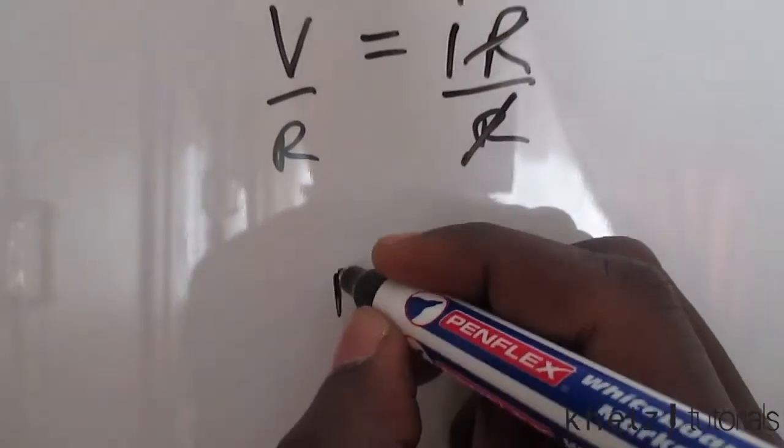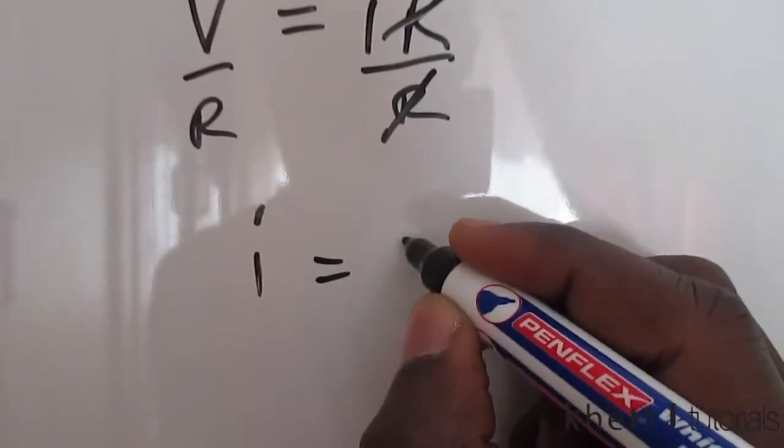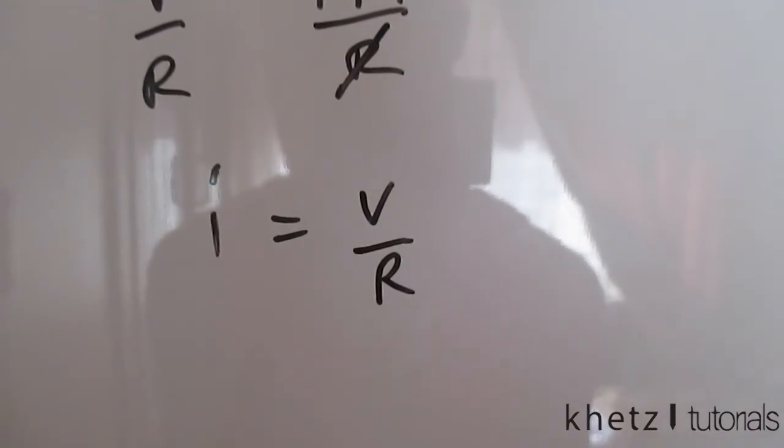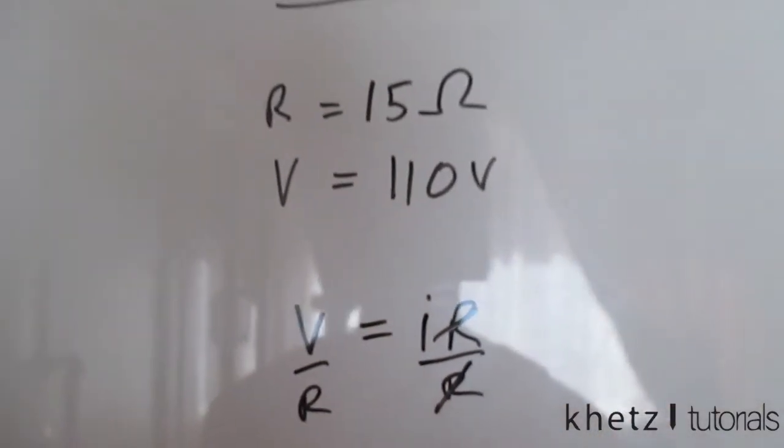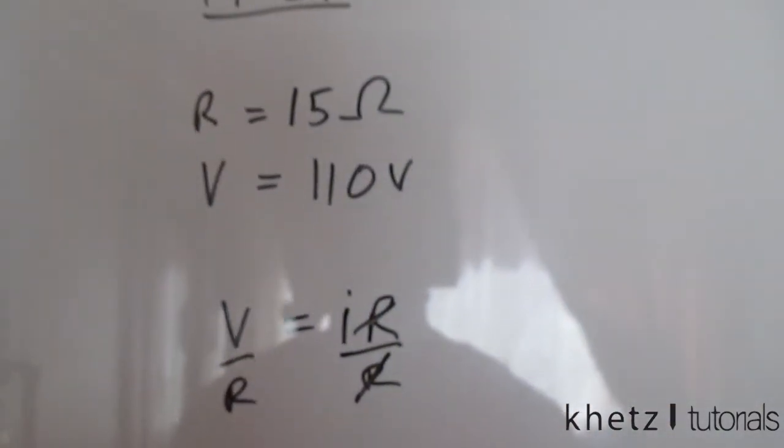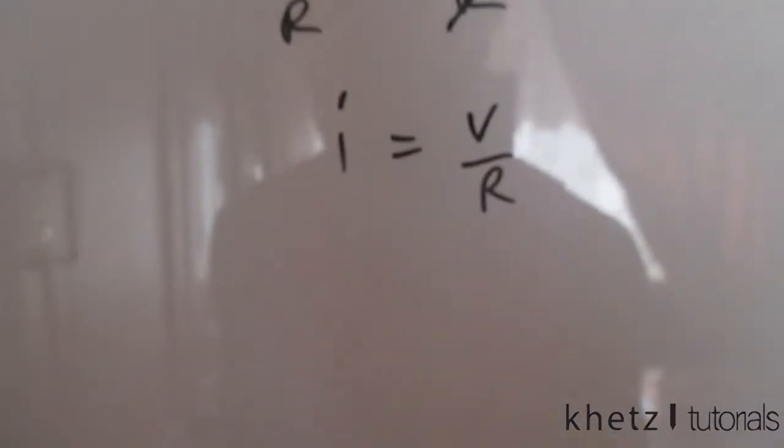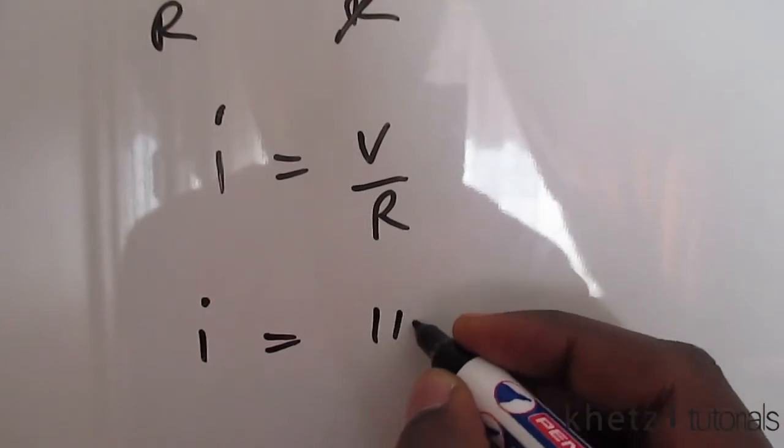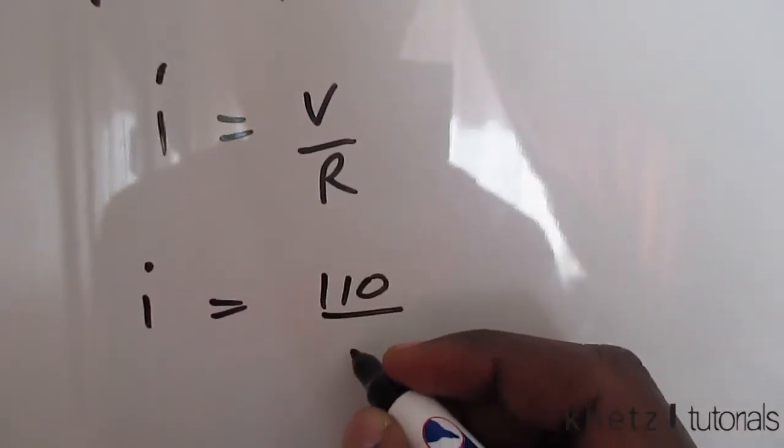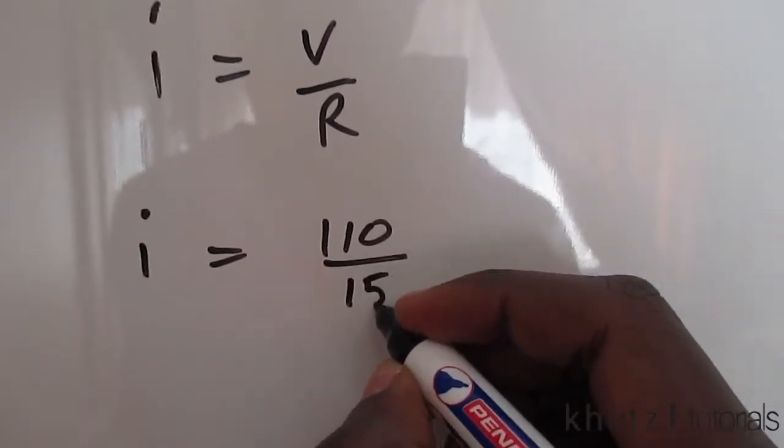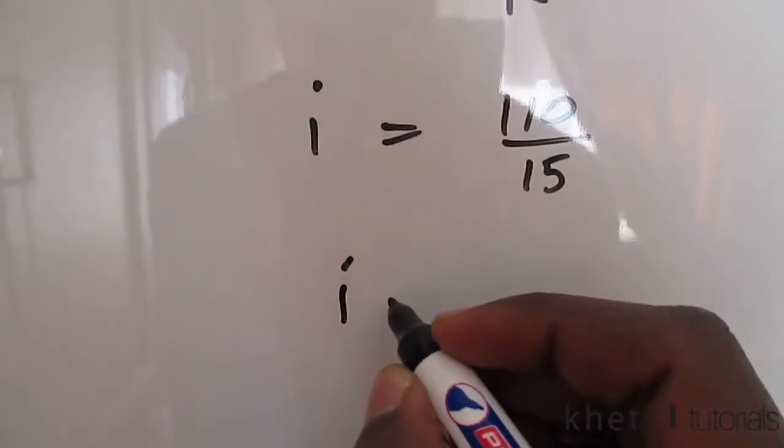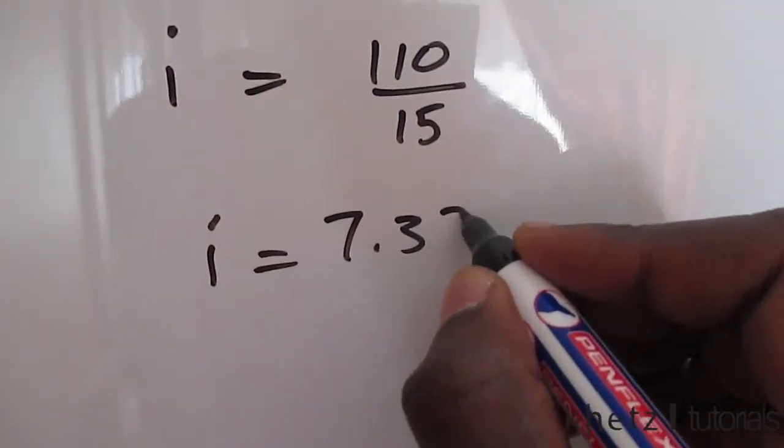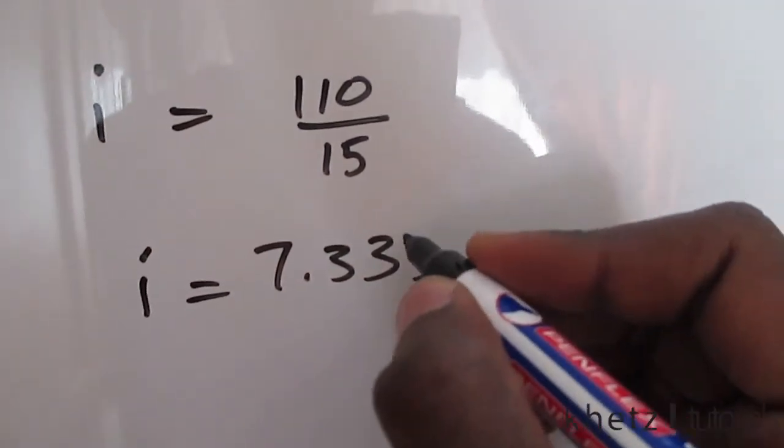Which gives us I equals V divided by R. Now plugging in the values we have here, which is basically all you have to do for this question: I equals 110 divided by the given resistance of 15, and your answer is going to be 7.333 recurring.